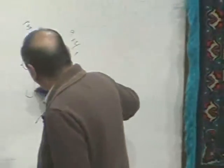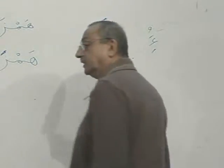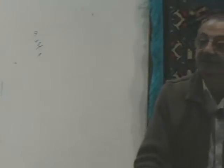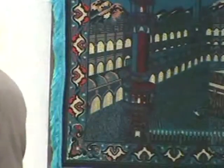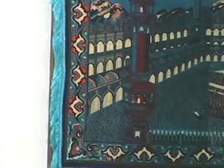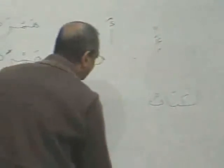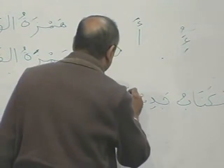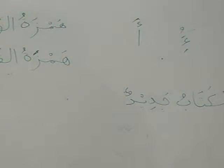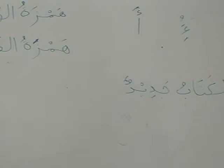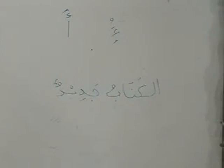Now, 'Al' — we will never write Al with a sign on the Hamza. Why? Because it is Hamzatul Wasal. Whenever there is Hamzatul Wasal, we just leave it alone. What is Hamzatul Wasal? If it comes in the beginning of a sentence, you pronounce it. If anything comes in front of it, you will not pronounce it. For example: Al-Kitabu Jadidun. I did not put anything on the Hamza — because it is Hamzatul Wasal.